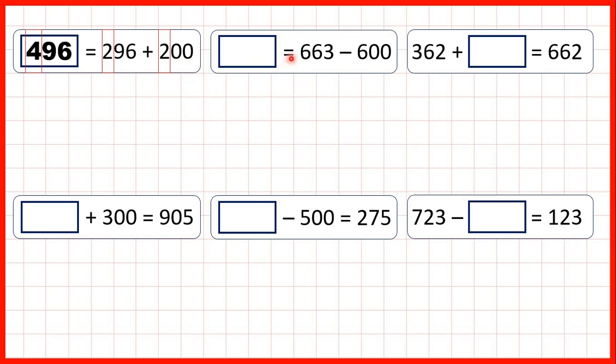Now, something equals 663 minus 600. So if we highlight our hundreds digits, we have 6 minus 6, which is 0. But we can just write 63 as our answer,